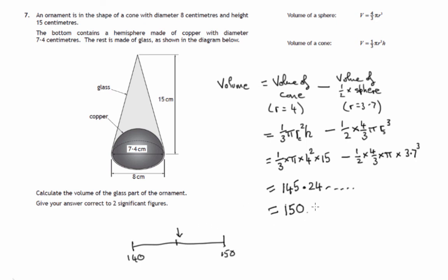so it will round up to 150 rather than down to the 140. So it's 150 cubic centimetres for the volume of the glass.